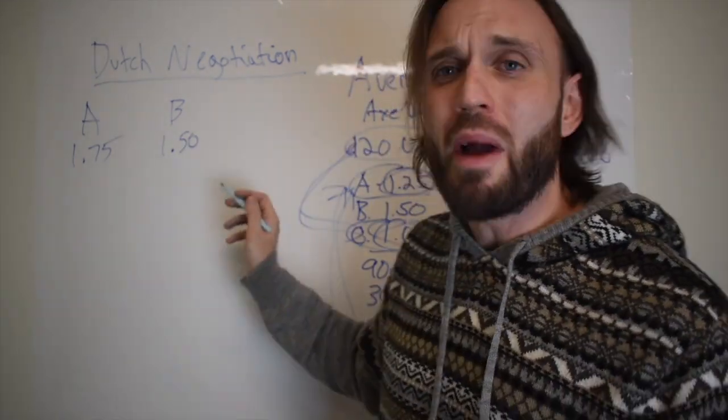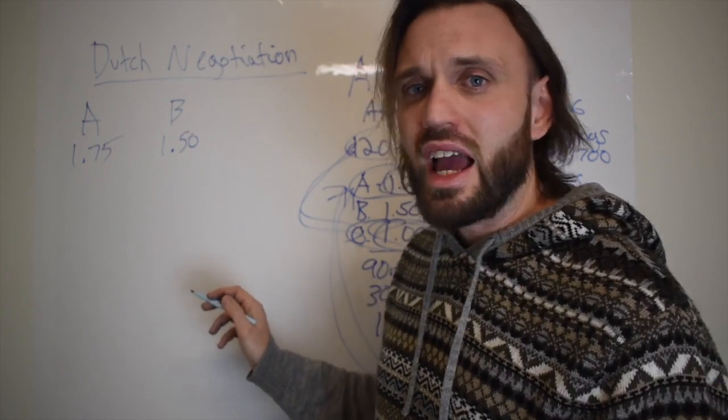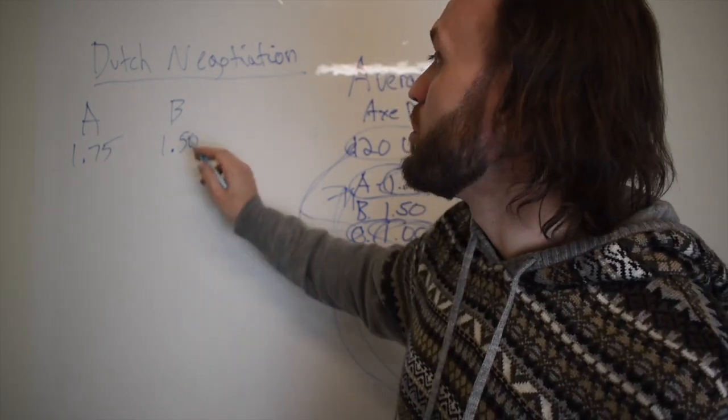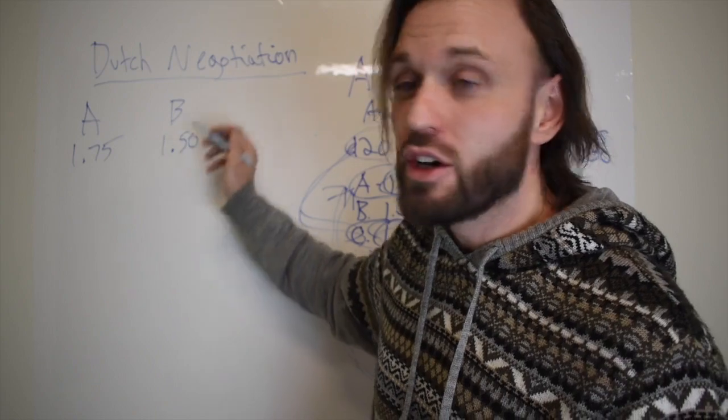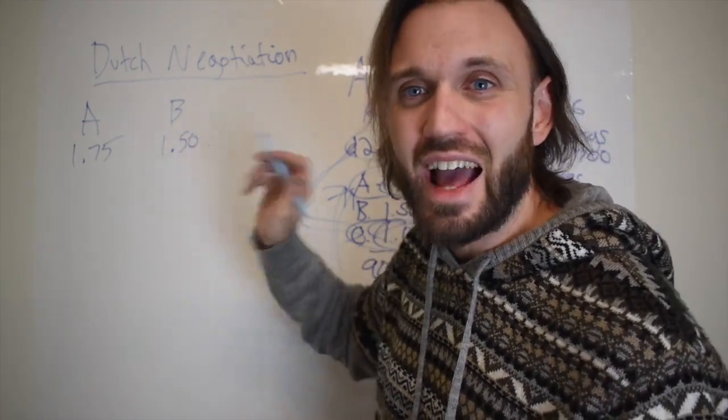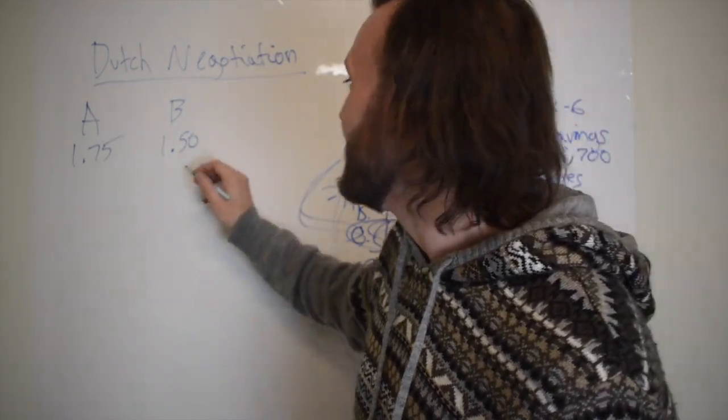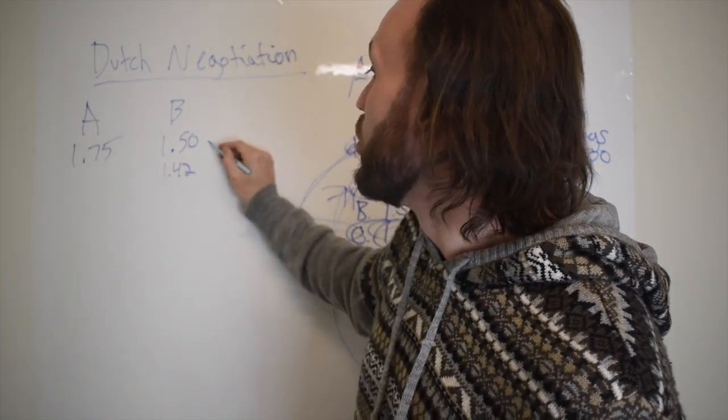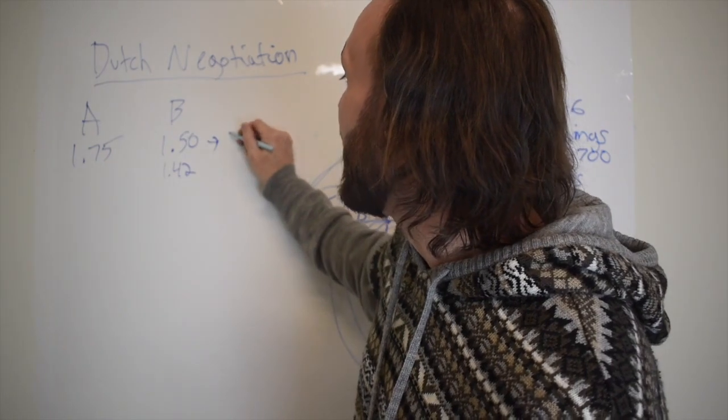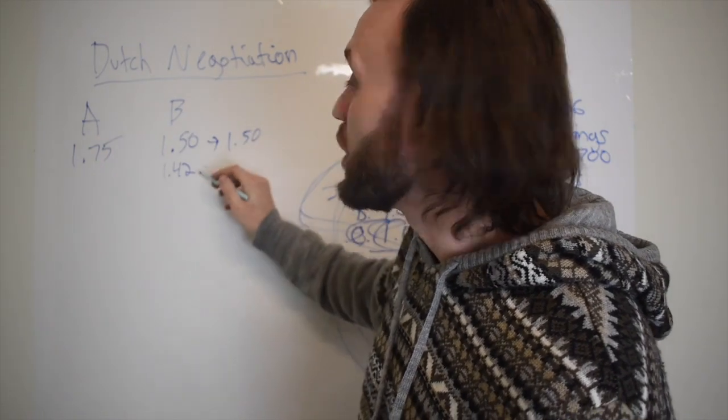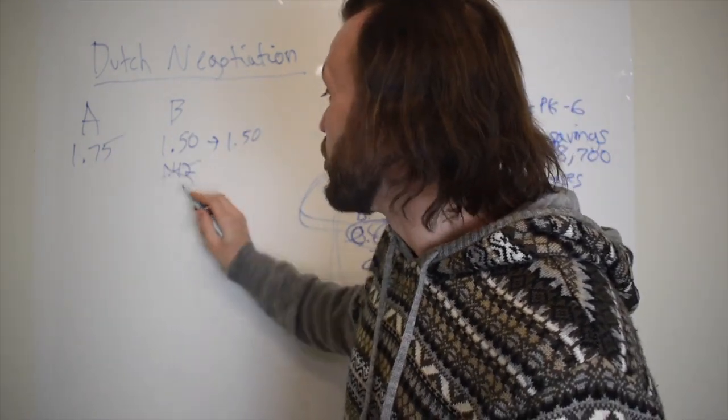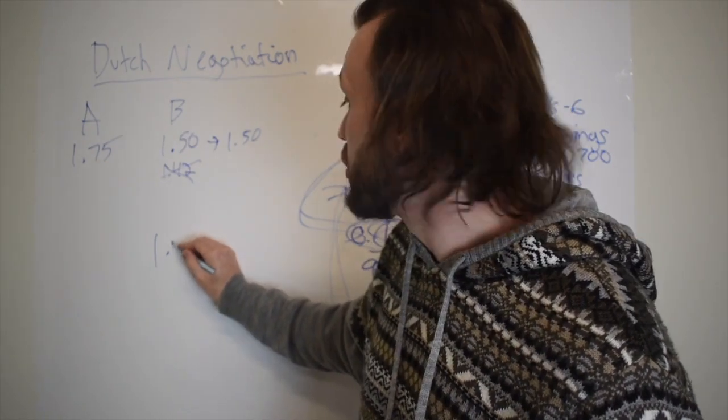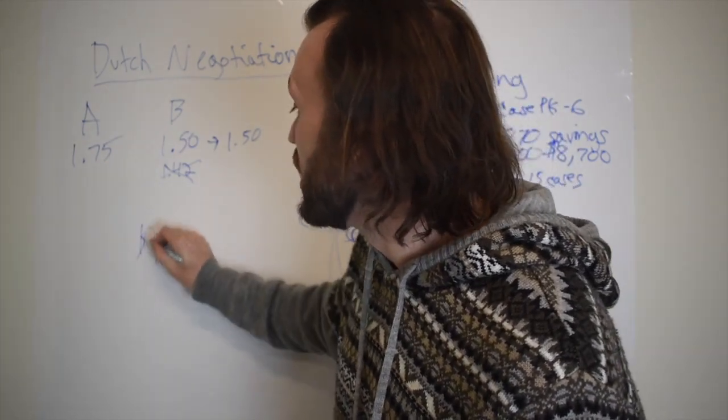So you're going to go back and forth with these companies and you're going to say, hey distributor B, I need this product for $1.42. Let's say that's the price you're trying to get to. And they're going to come back and say, nope, we're standing firm at $1.50, no way we can go down to $1.42, absolutely not. The goal here is to get the product for $1.42 because that's the price you need it at to make money.